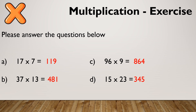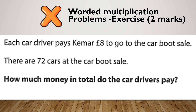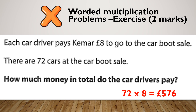Let's have a look at what that might look like in an exam situation. Each car driver pays Kamar £8 to go to the car boot sale. There are 72 cars at the car boot sale. How much money in total do the drivers pay? Hopefully you got 576. So 72 times by eight: eight times two is 16, put my six down and carry my one. Eight times seven is 56, add my one is 57. So 576.